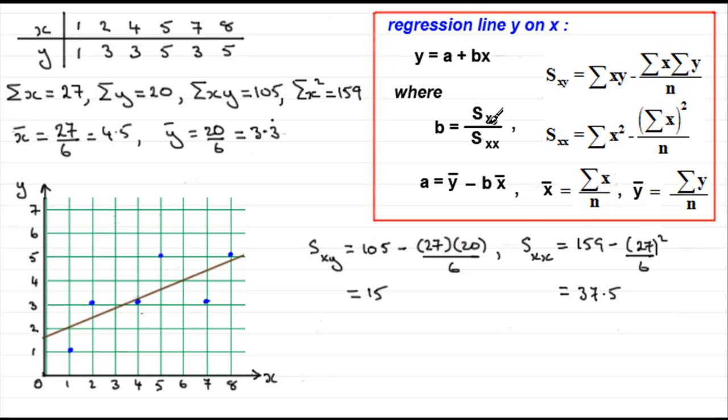So that means that we can get b. b is going to be equal to s_xy divided by s_xx. So in other words, 15 divided by the 37.5. Do that, and you end up with 0.4.